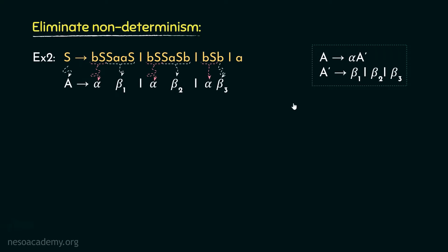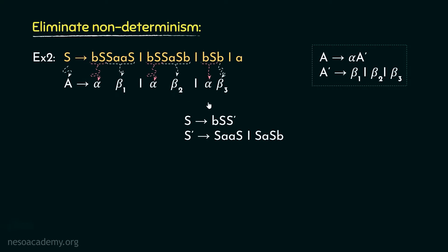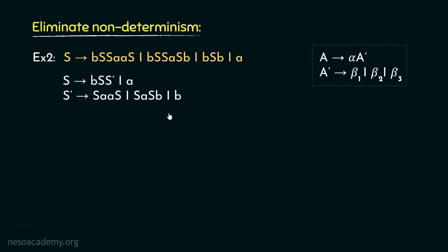Let's convert it to the standard form. S can be rewritten as the common prefix BS followed by a new non-terminal S'. Then S' can be rewritten as SAAS (beta1), or SASB (beta2), or just B (beta3). Since S can also derive A, we include that rule: S → A. Now looking at S' as the non-terminal A, in these two productions, SA are the alphas. Hence AS would be beta1 and SB would be beta2.